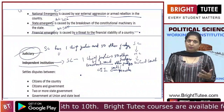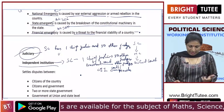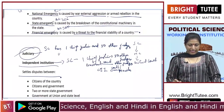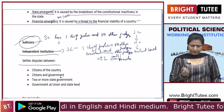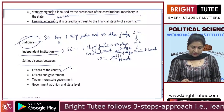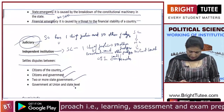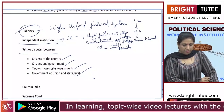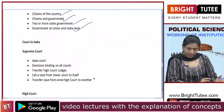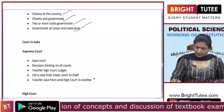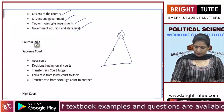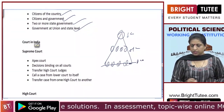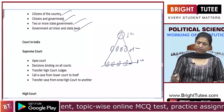To maintain independence and impartial decisions, the judiciary must be separate from the control of the legislature and executive — only then will people have trust in the judicial system. The major function of the judiciary is to settle disputes: disputes between citizens, between citizens and the government, between state governments, and between the Union and state governments. Our judiciary is a single unified judicial system that works as a pyramid.